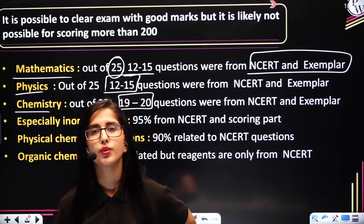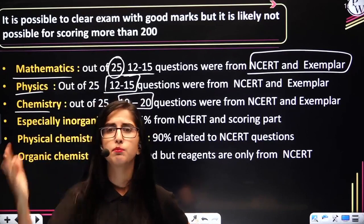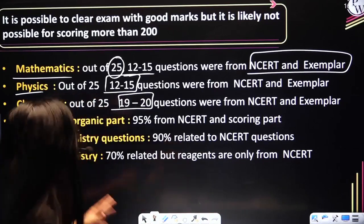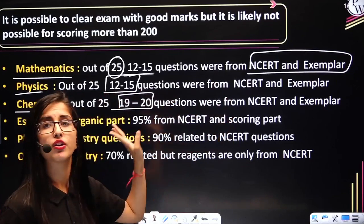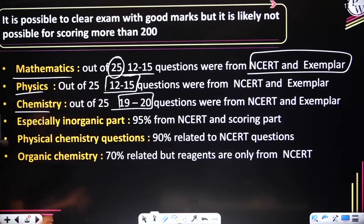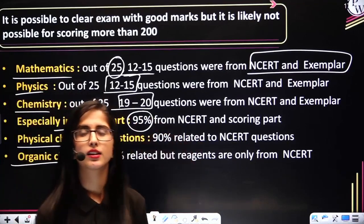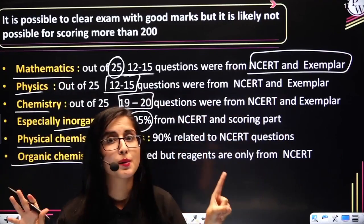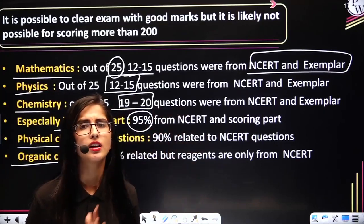So the trend is changing — JEE is increasingly starting theoretical questions, and NCRT plays a major role in theory. For other books like physics, H.C. Varma is very important to build your conceptual knowledge. In chemistry, the highest amount of marks come from NCRT — that is 19 to 20 questions out of 25. Within chemistry, comparing physical, organic, and inorganic: inorganic has 95% of questions from NCRT. Concepts from NCRT are joined and merged to form questions.